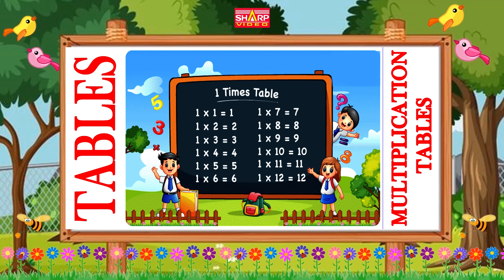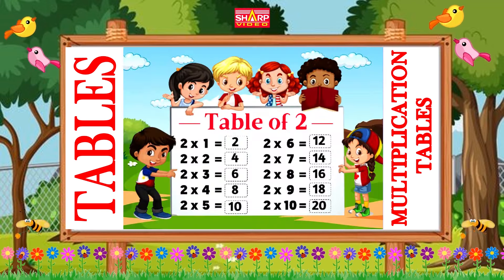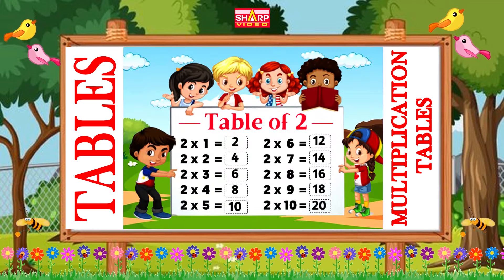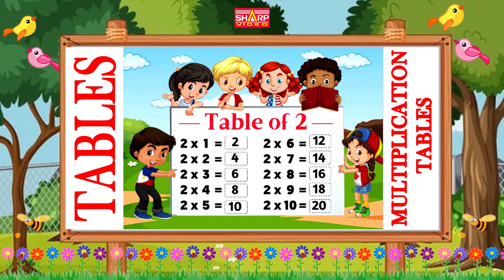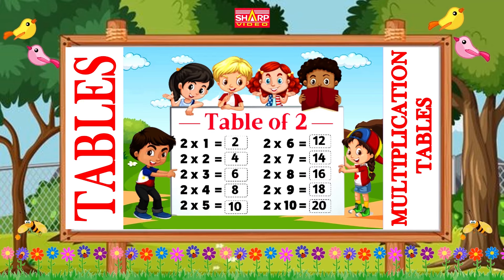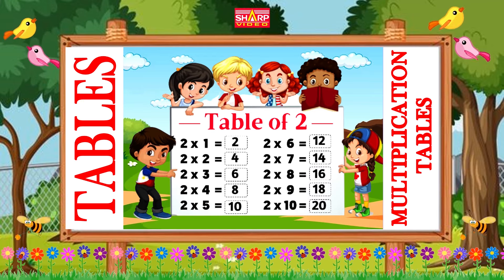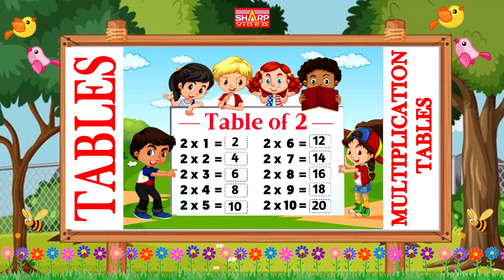two ones are two, two twos are four, two threes are six, two fours are eight.